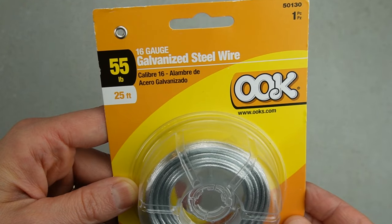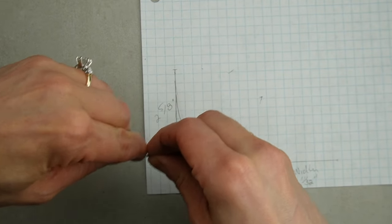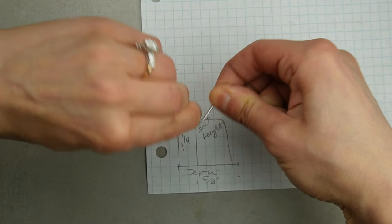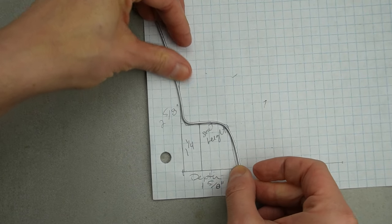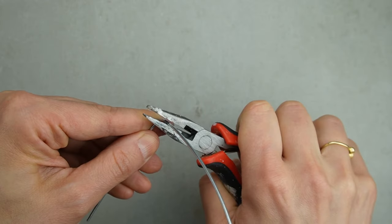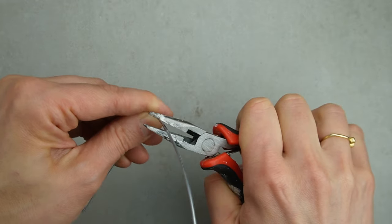I got this 16 gauge steel wire when I was making a clay sculpture. I'm starting out by bending the wire with my fingers into roughly the correct shape.